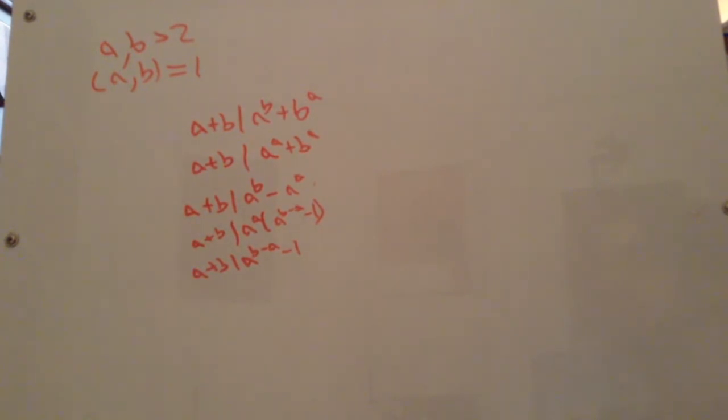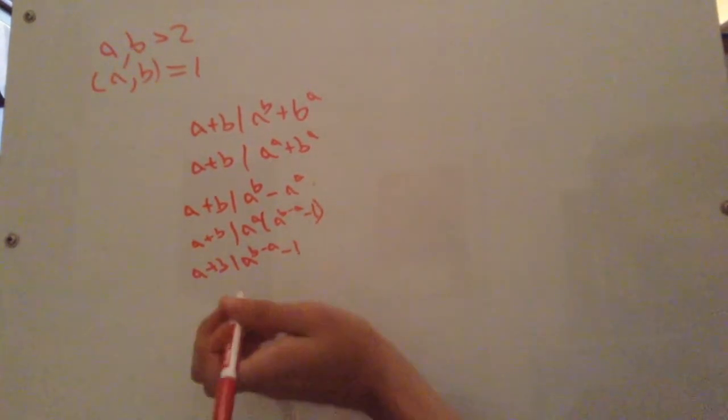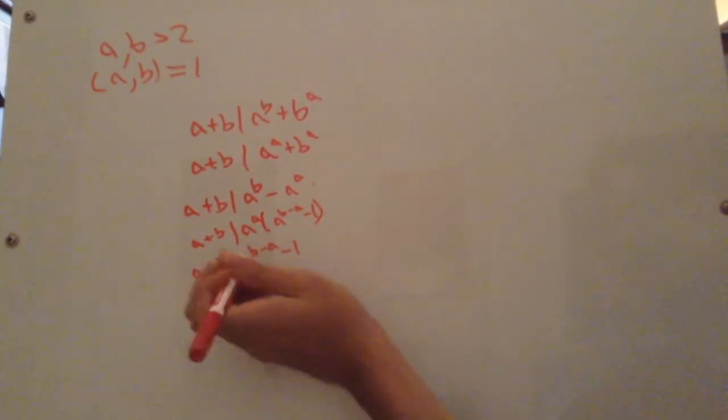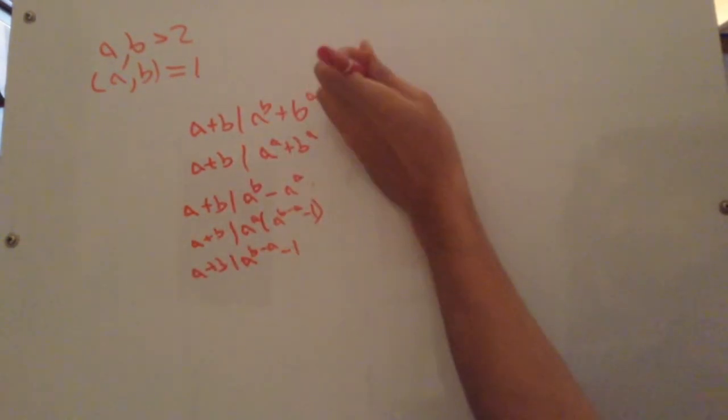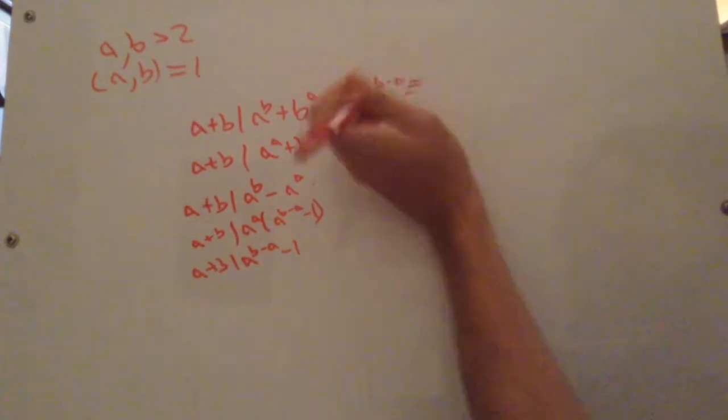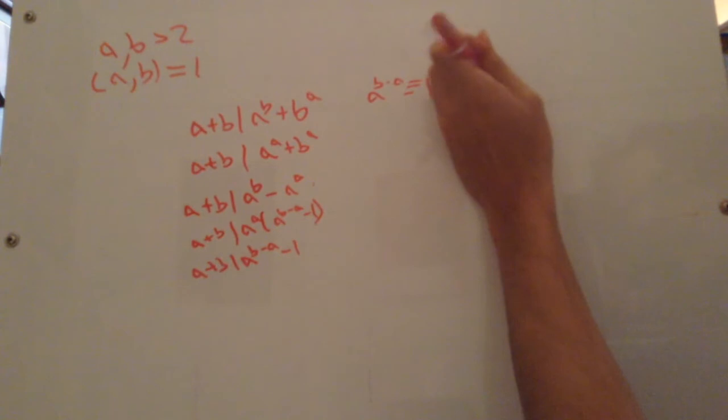So, now it's time to move away from writing this as divisibility and to start writing this as remainders. If this has a remainder of 0 when divided by this, in other words, if this is divisible by this, then a to the b minus a has a remainder of 1, or is mod 1, mod a plus b.